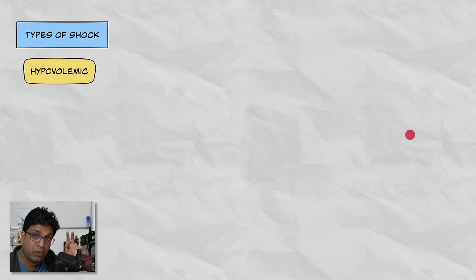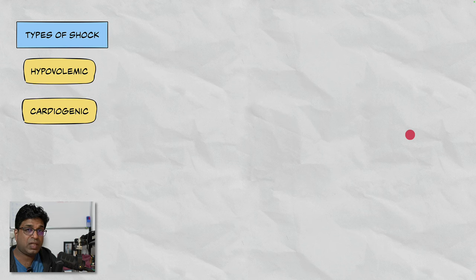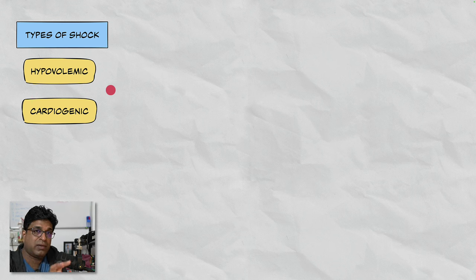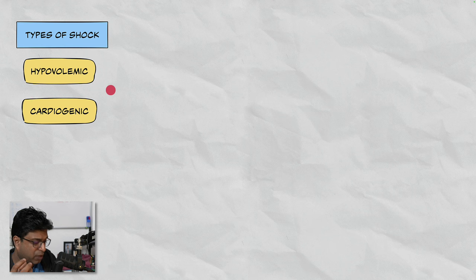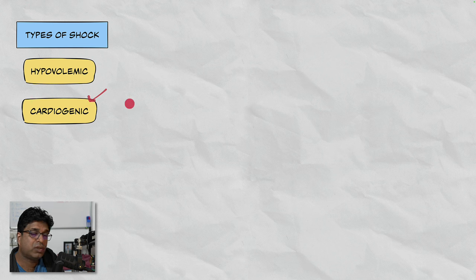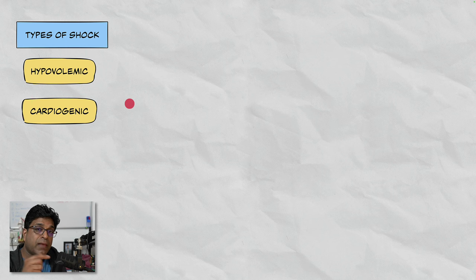In hypovolemic shock, vasopressors and inotropes are not required — you need to supplement fluids, blood products, colloids, or albumin. Once adequate volume is present, the second type is cardiogenic shock, where the heart is not able to pump blood forward. It is usually seen in myocardial infarction, congestive heart failure, myocarditis, tachyarrhythmias, bradyarrhythmias, or valvular insufficiencies like mitral stenosis or mitral regurgitation. In cardiogenic shock, an inotrope is what is primarily required.